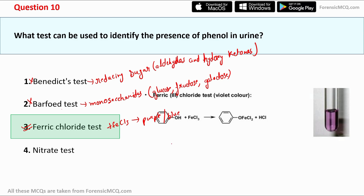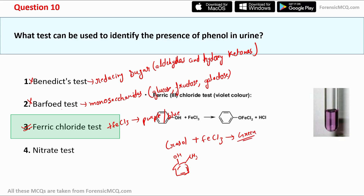Apart from phenol, there is another closely related chemical known as cresol, which has an OH and CH3 structure. When cresol reacts with ferric chloride FeCl3, it gives a green coloration rather than the purple or blue seen with phenol.